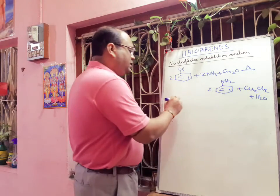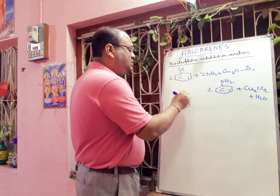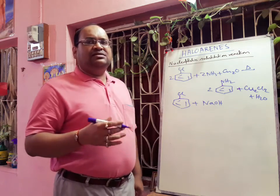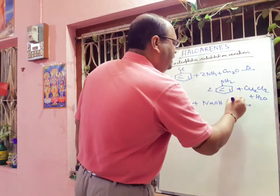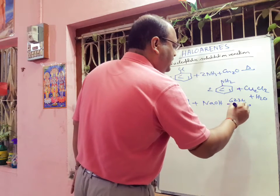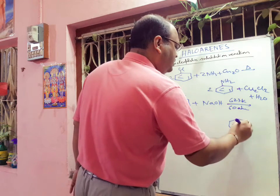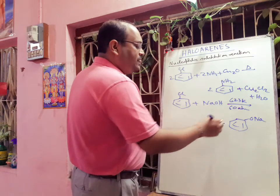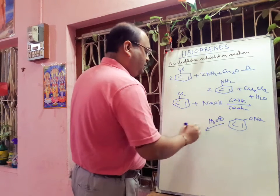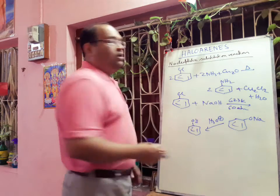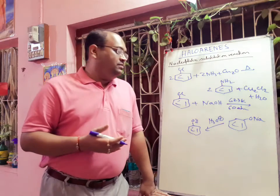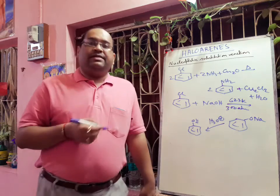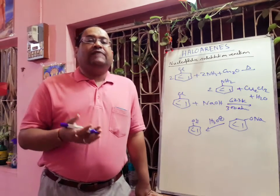Another process is called the Dow's process. Chlorobenzene reacts with sodium hydroxide at 623 Kelvin and 300 atmospheric pressure to form sodium phenoxide. If we then add HCl, we get phenol. So the conditions for this reaction are very drastic — 623 Kelvin temperature and 300 atmospheric pressure.